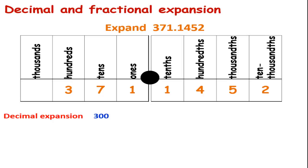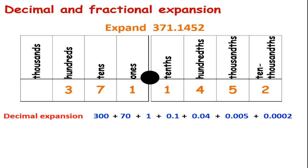Now look at the decimal expansion of 371.1452. We have three hundreds, so we write 300. Plus we have seven tens, so we write 70. Plus we have one one, so we write plus 1. We have one tenth, so we write plus 0.1. We have four hundredths, so we write plus 0.04. We have five thousandths, so we write plus 0.005. And in the ten-thousandths position we have two, so we write plus 0.0002.